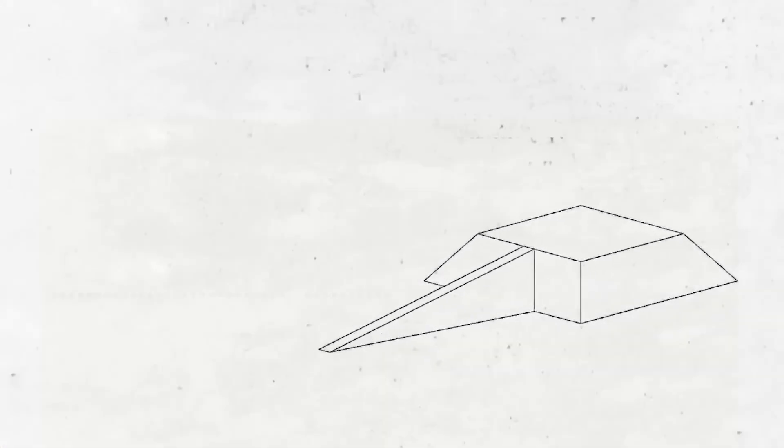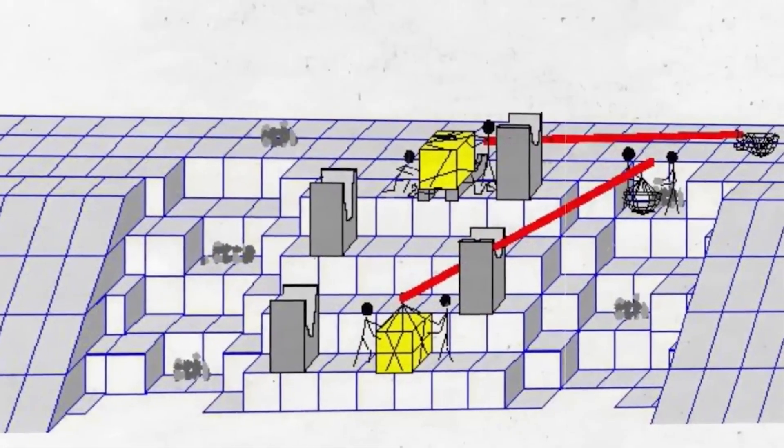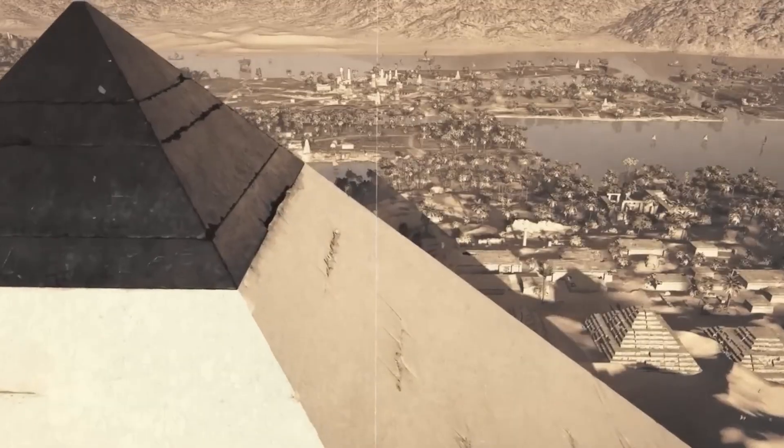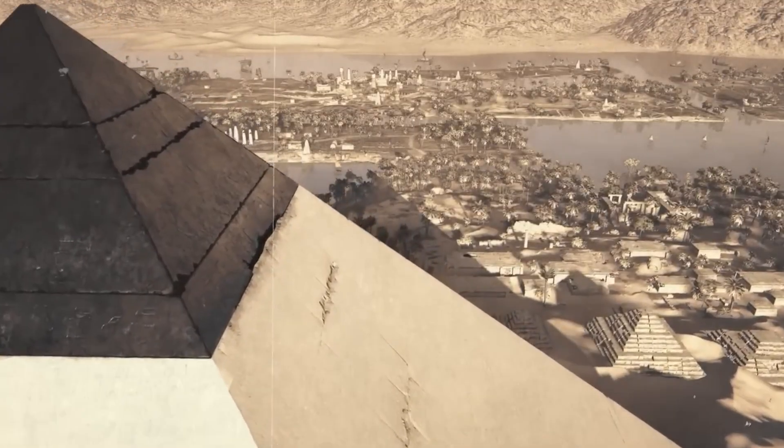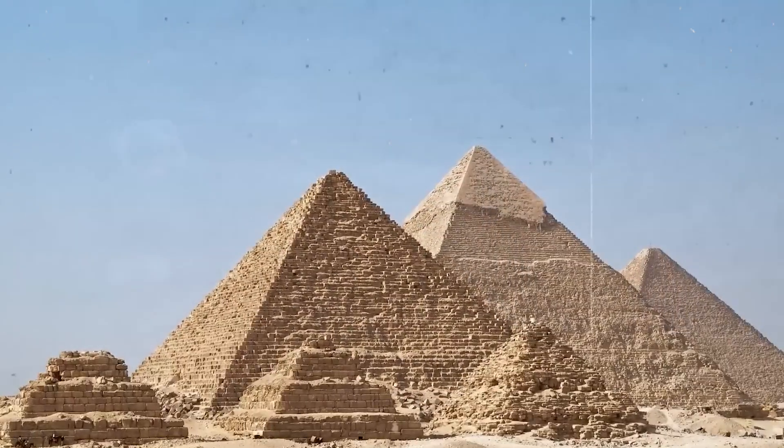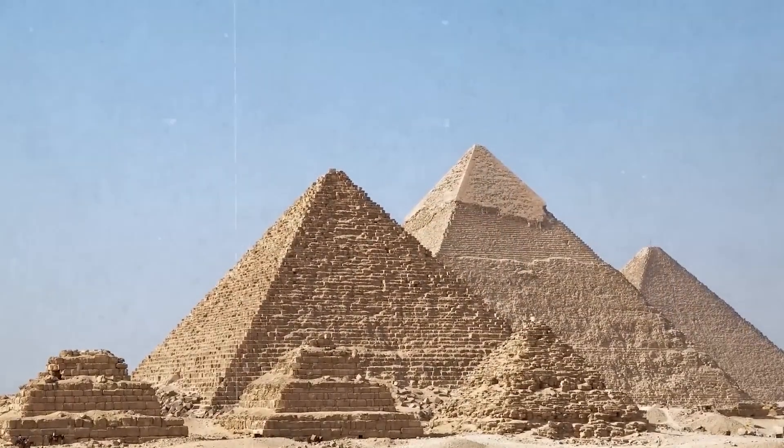When it comes to lifting the stones, things get even more interesting. There are several theories. One of the most common is the ramp theory. It suggests that large ramps were built to drag the stones up as the pyramid rose. These ramps could have been straight, zigzagged, or wrapped around the pyramid in a spiral.